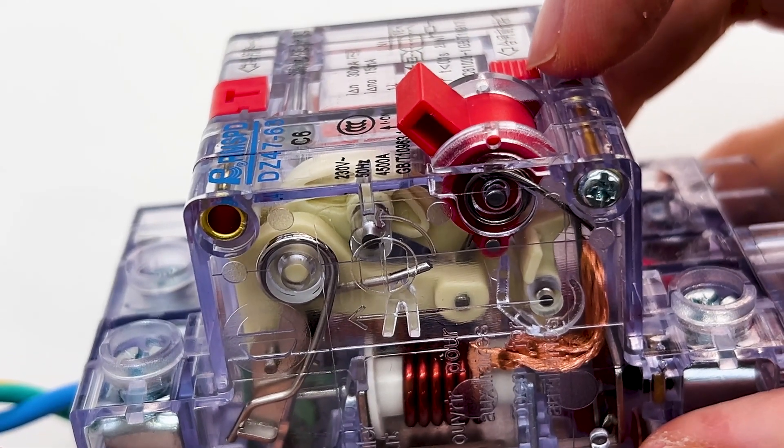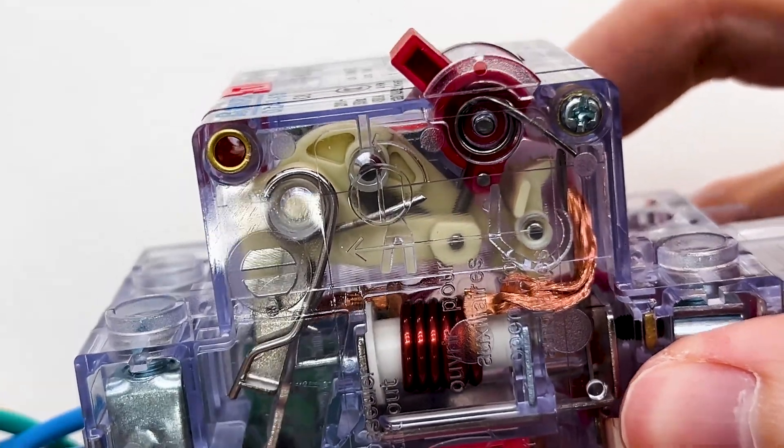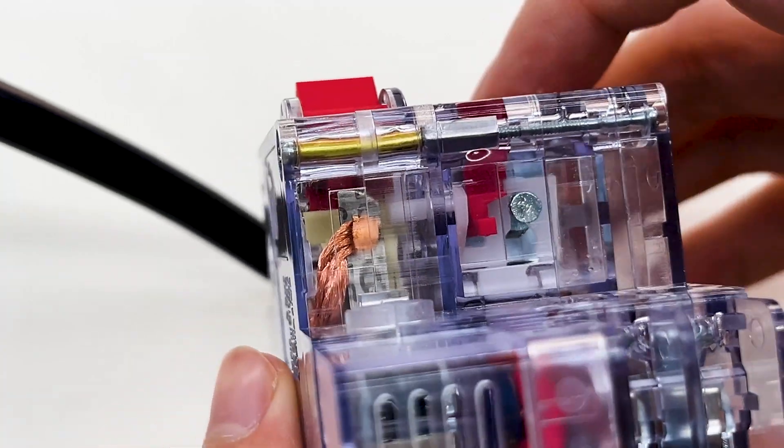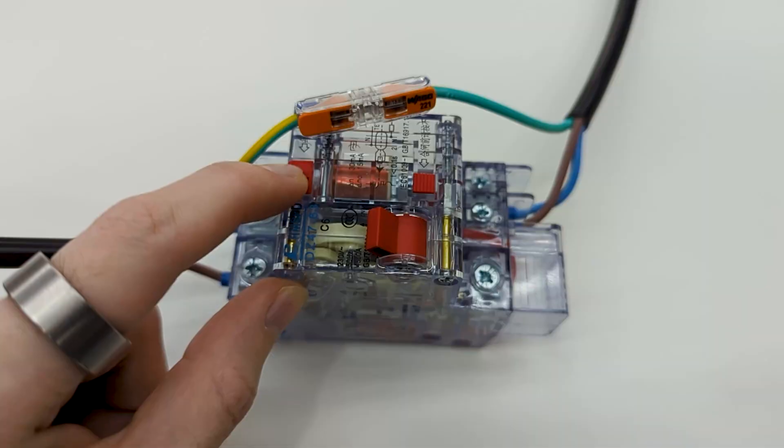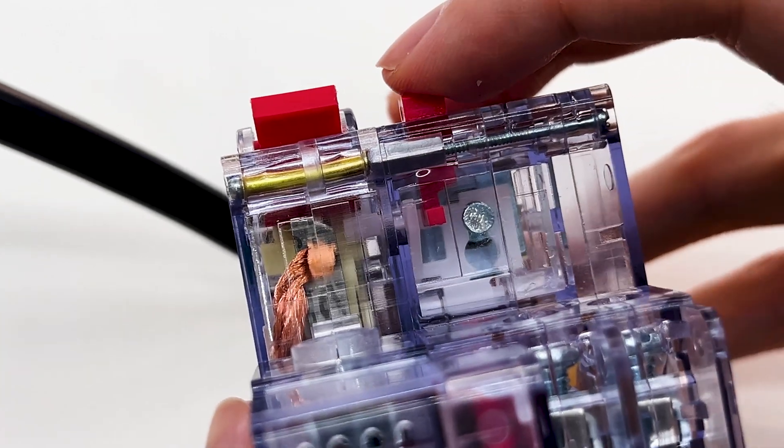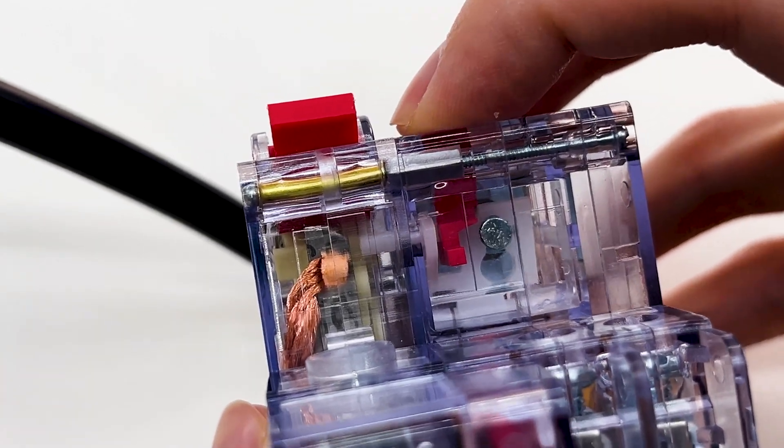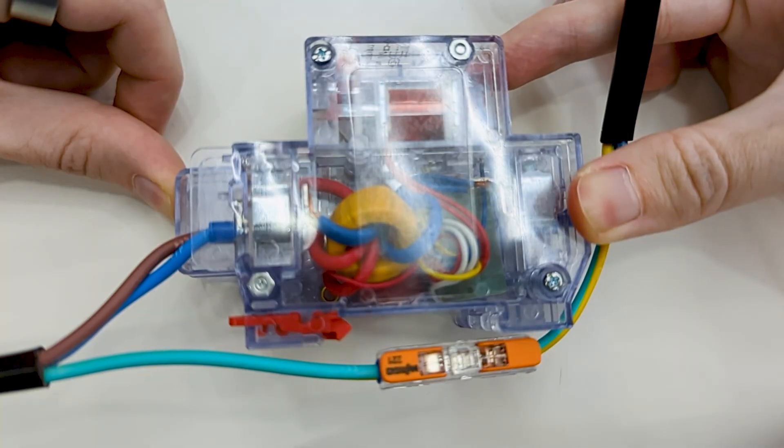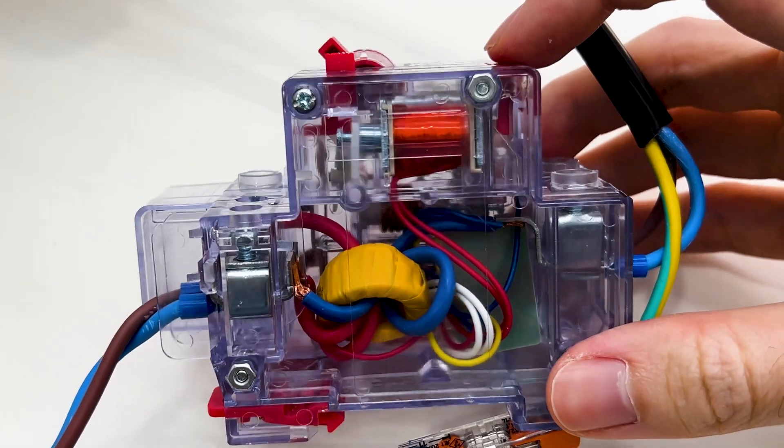When this is not reset, I cannot turn on the breaker. Let's see the other angle. Here you can see from the bottom. Now it triggers and reset it. Also from this side. This is how it looks like.